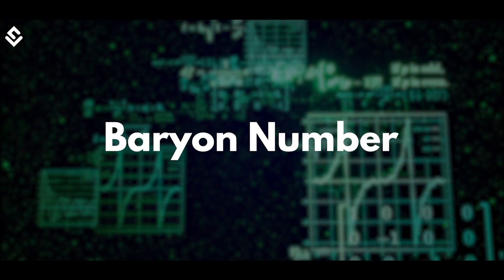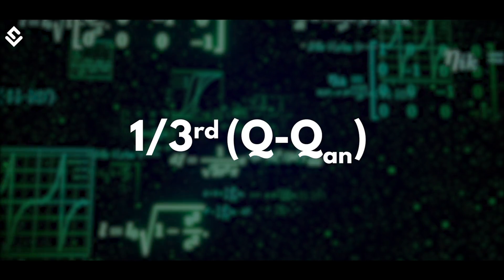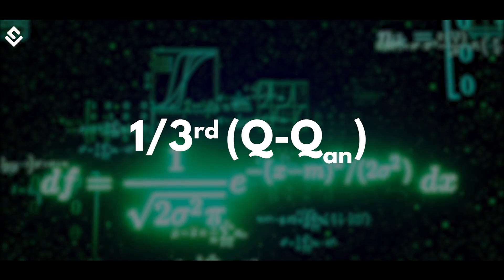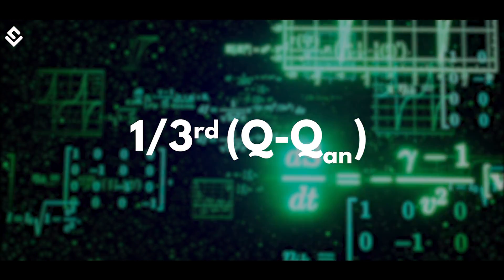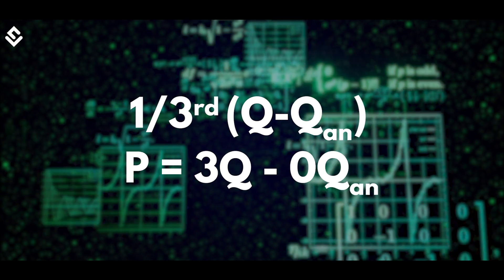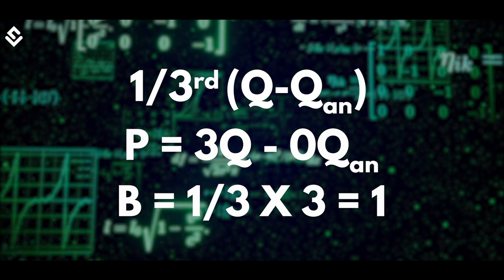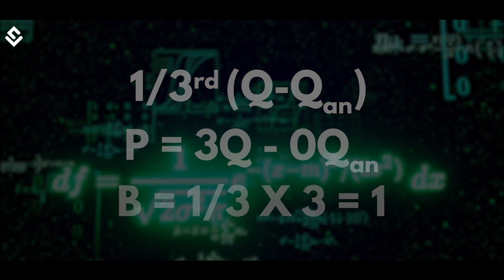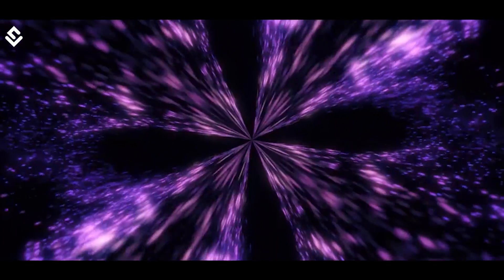Baryon number can mathematically be expressed as one-third of the difference of the number of quarks and anti-quarks. For example, a proton has three quarks and no anti-quark, thus it has a baryon number of one. This baryon number and lepton number must be conserved for each particle for the symmetry to be preserved.